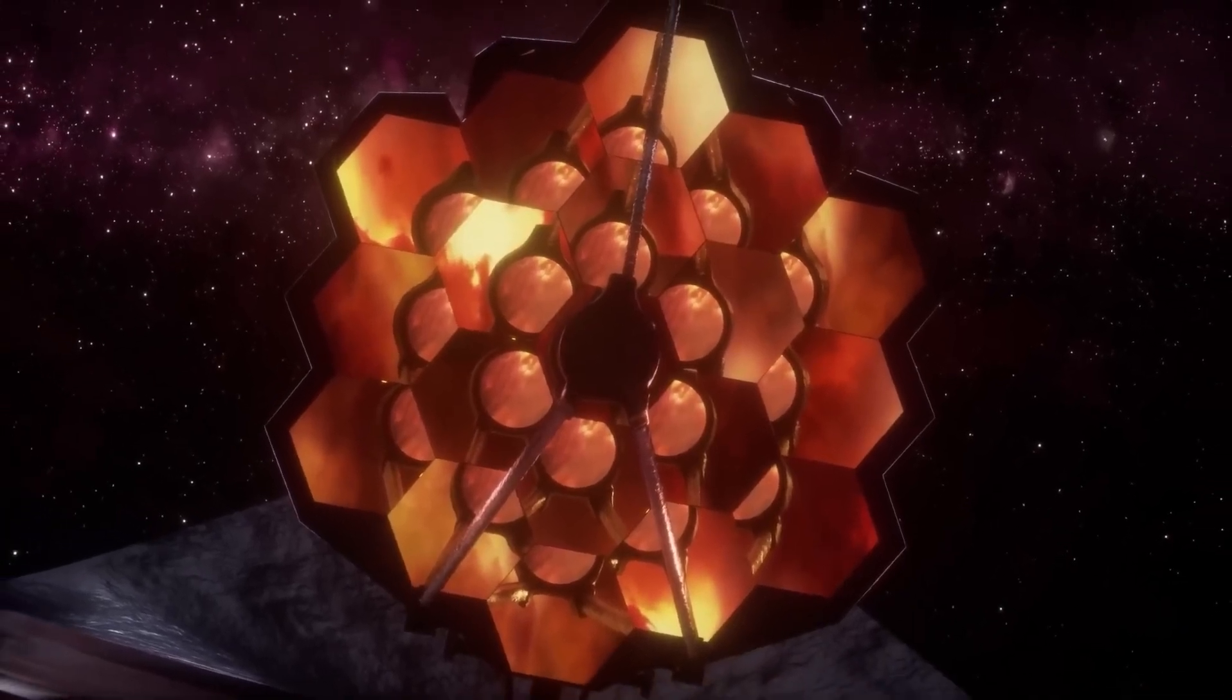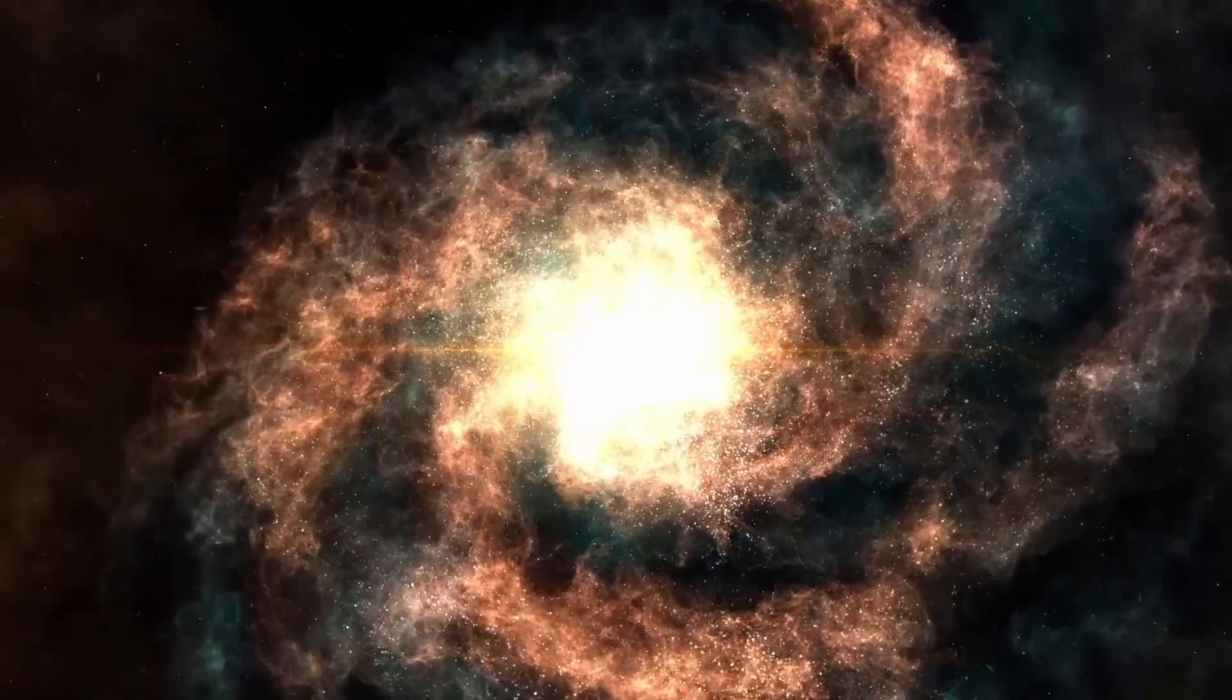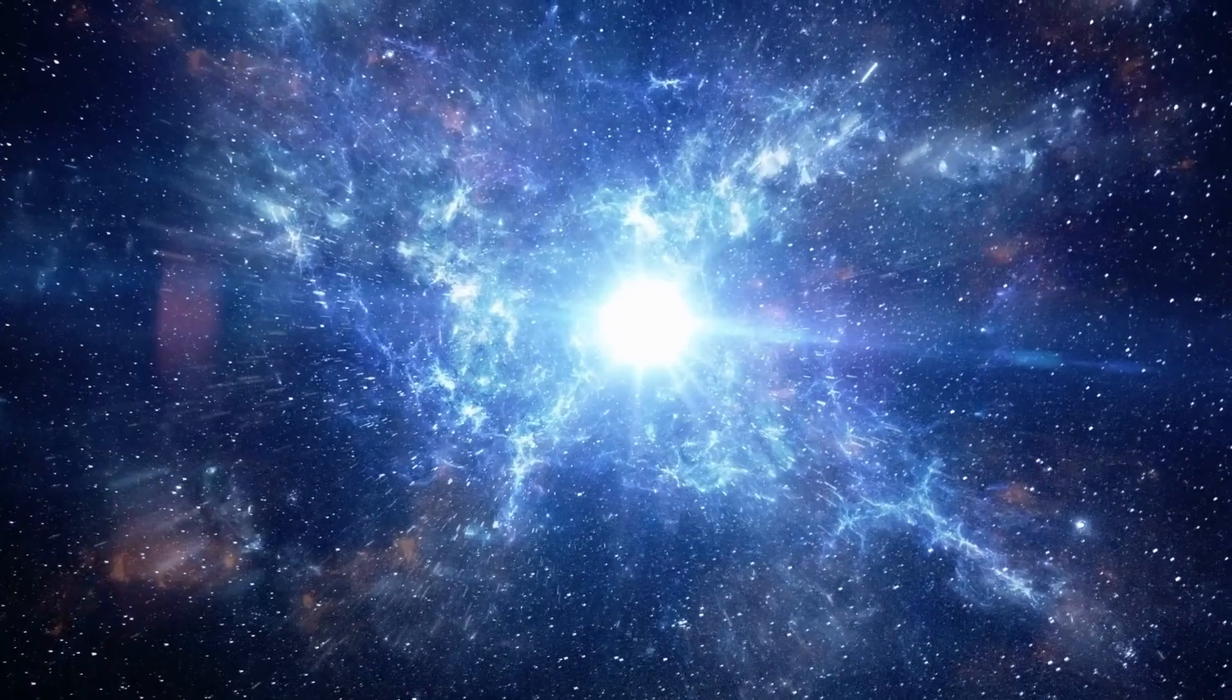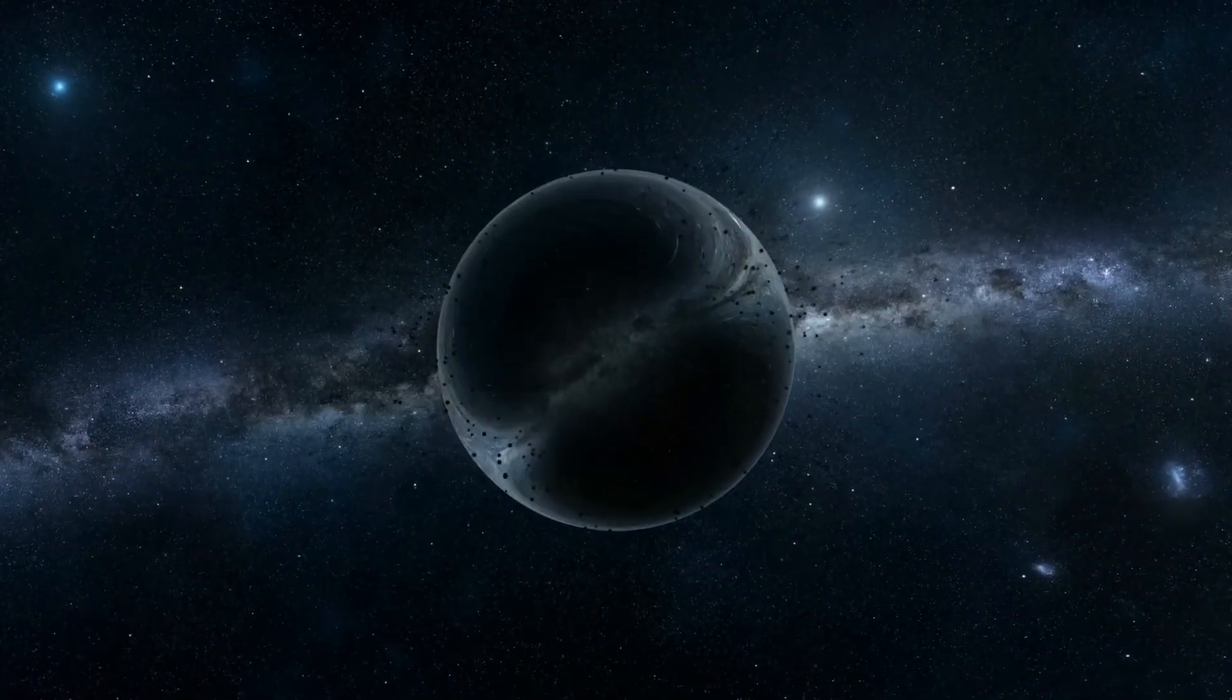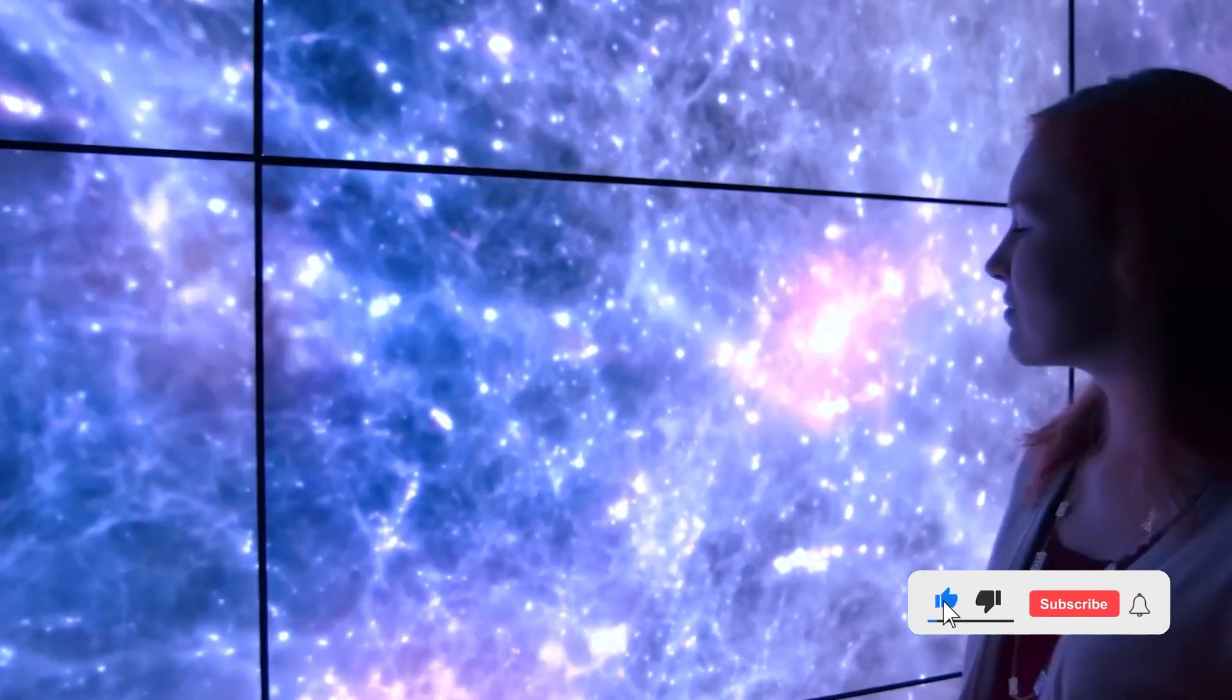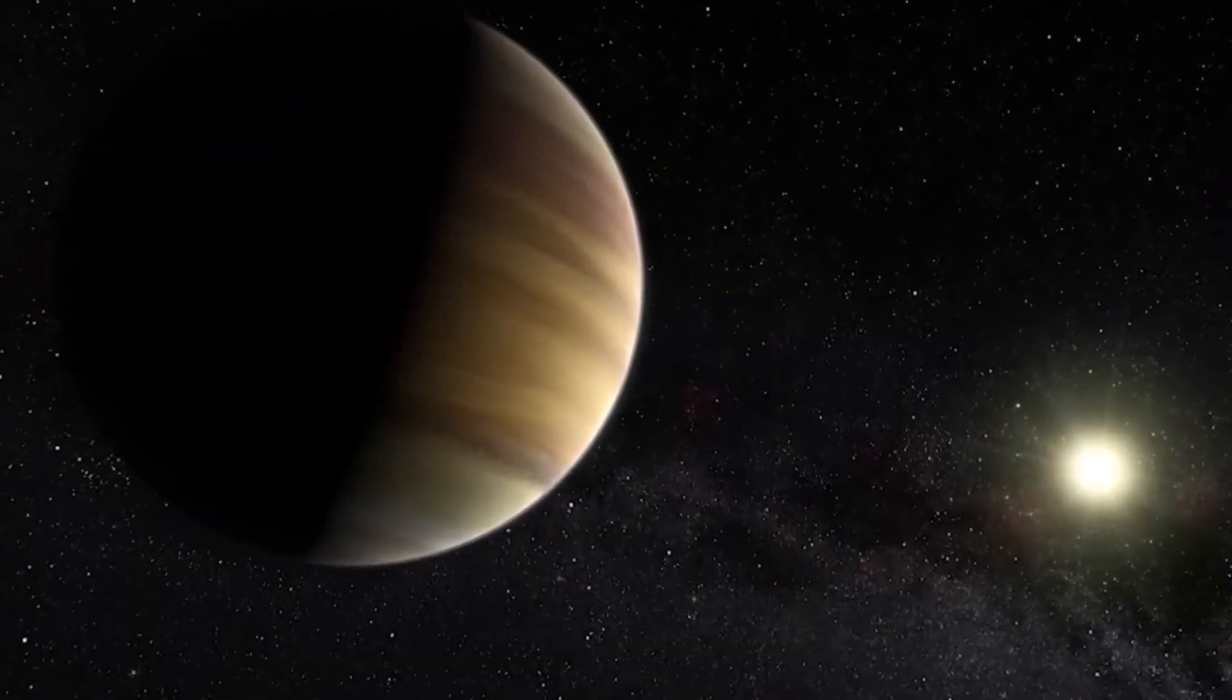Recent findings from the JWST challenge previous assumptions about the early universe. Traditional beliefs suggested that galaxies formed distinct structures, such as spiral arms and bars, approximately 6 billion years after the Big Bang. However, the JWST's high-resolution data indicates that these structures may have manifested as early as 3.7 billion years after the Big Bang, reshaping our understanding of galaxy formation and evolution.